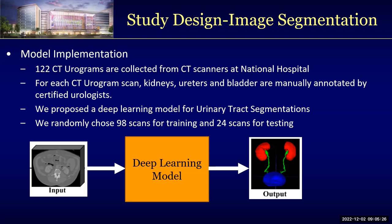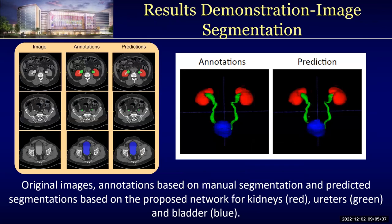In our model, we randomly chose 98 scans for training and 24 scans for testing. Here are some representative case demonstrations generated from our model. The first column shows the original image slice, the second column shows the annotations, and the third column shows our model predictions. The annotations were generated by manually segmenting from the urologist.